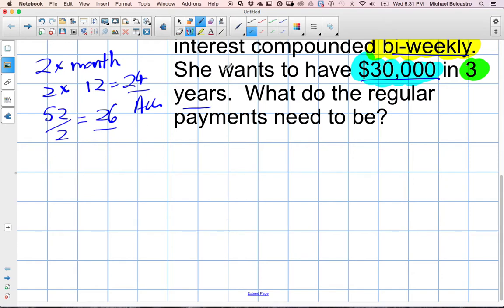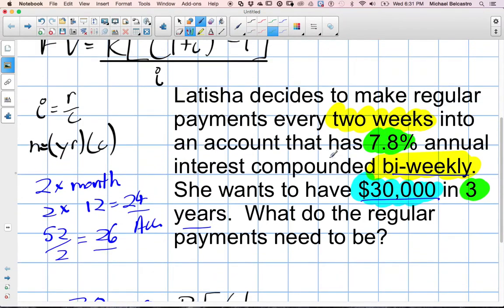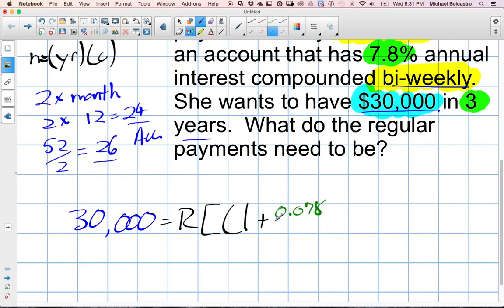So future value is going to be $30,000. The regular payments are what we're going to calculate. And then it's going to be 1 plus i is 7.8, so it's going to be 0.078 divided by, so this is where this comes in. Is it 24 or 26? We'll work with 24 to start, and then maybe we'll try to replace after with 26. So we have to figure that out as a value. Then to the power of n. n is the number of years. I said it was going to be three years. So n is three years times the compound period. That's where this comes into play. So it's going to be times 24. 3 times 24 is 72. So we're going to be at the power of, that should be outside the brackets, 72.